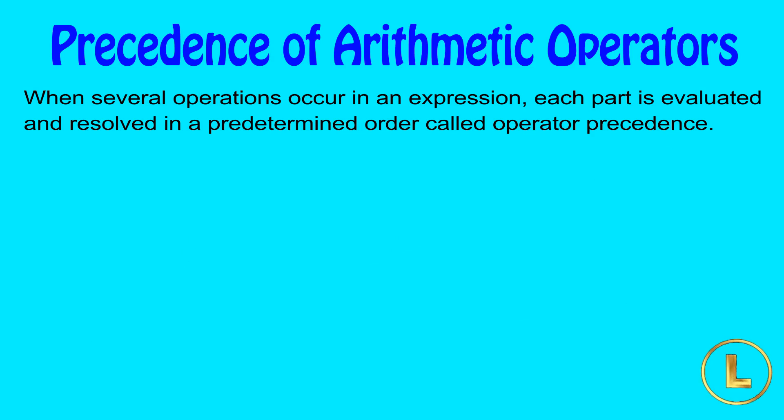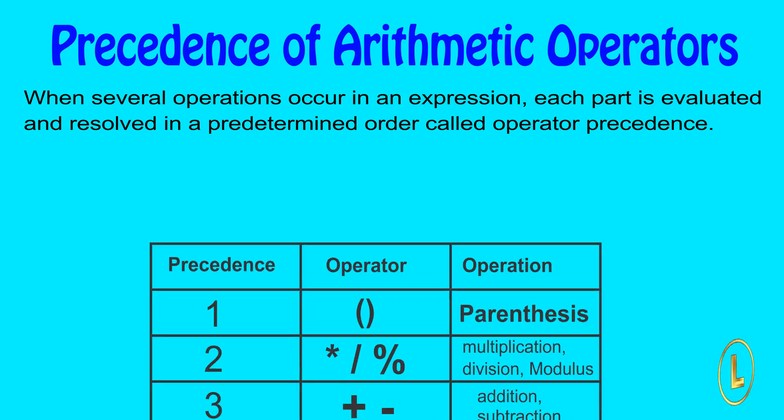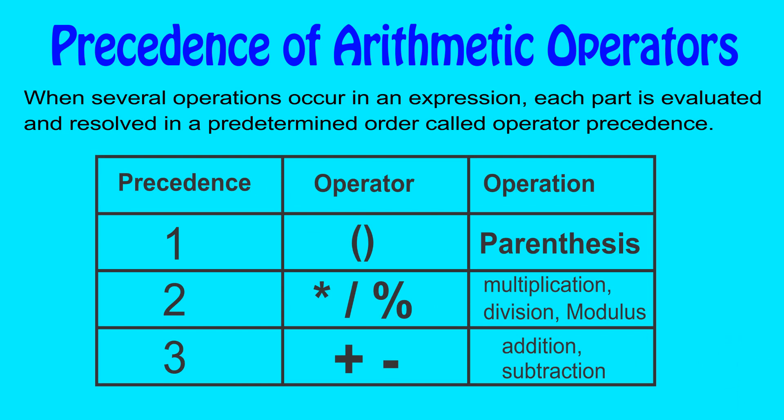When several operations occur in an expression, each part is evaluated and resolved in a predetermined order called operator precedence. This table explains the precedence of the arithmetic operators. When expressions contain operators from more than one category, the parentheses are used to force the evaluation order. The operators in the parentheses are evaluated first.